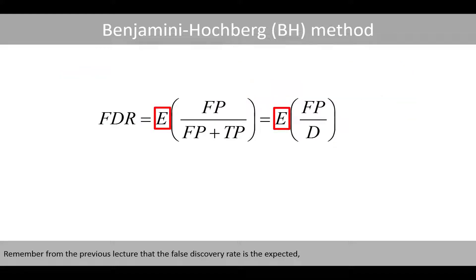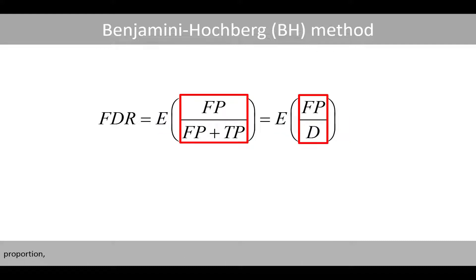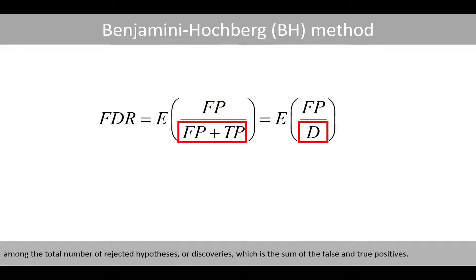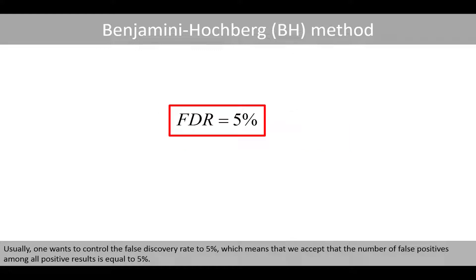Remember from the previous lecture that the false discovery rate is the expected proportion of false positives among the total number of rejected hypotheses, or discoveries, which is the sum of the false and true positives. Usually, one wants to control the false discovery rate to 5%, which means that we accept that the number of false positives among all positive results is equal to 5%.